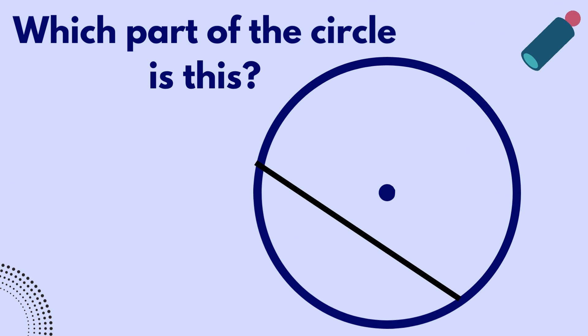Which part of the circle is this? It's a line segment whose end points are on the edge of the circle and it's not passing through the center of the circle. Marvelous. It's a chord.